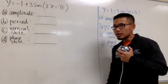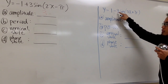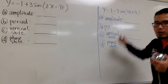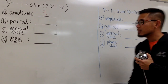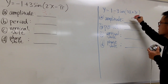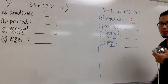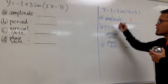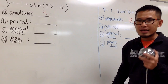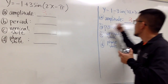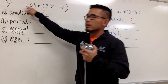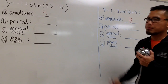What if we had a negative 3 right here? For the amplitude, remember, we have to take the absolute value. In that case, the amplitude is still going to be positive 3. So remember, the amplitude answer is always going to be a positive answer, regardless of whether the sine has a plus or minus sign.